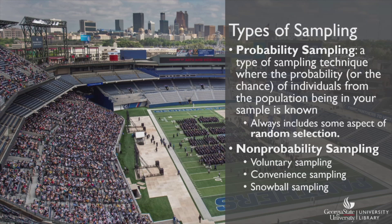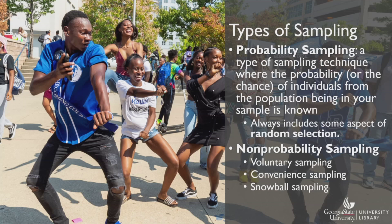There are many other non-probability sampling techniques, such as convenience sampling. Let's say I want to poll students about a possible change of the school colors. I head to the student center where I see a group of students outside dancing, and I ask them to fill out my poll. These students have become a part of my sample because they were conveniently available.